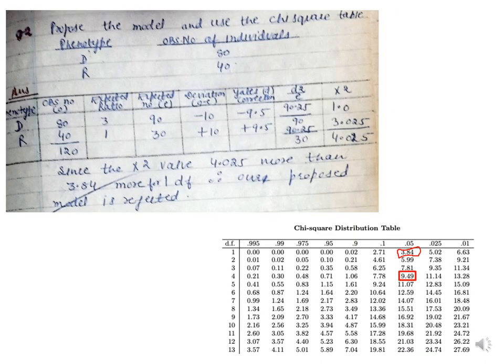In this next question, Yates correction is applied because the degrees of freedom is 1 — there are 2 phenotypic classes, so 2 − 1 = 1. The calculated chi-square value is 4.025, which is greater than the permissible limit of 3.84 at degrees of freedom 1. Therefore, this model is rejected.